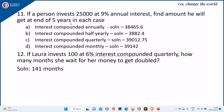That will be your n value for quarterly compounding. For monthly compounding, it is 9 divided by 12 into 1 divided by 100, and 5 years will be 5 into 12 as the n value. If you apply those, then you will get these values.